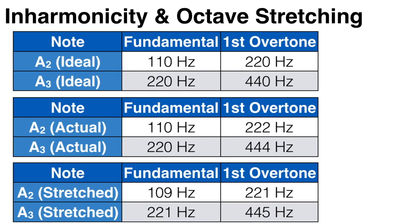So let's take two notes an octave apart: A at 110 Hz and A at 220 Hz, an octave higher. Now in theory, the first overtone of the lower note should be exactly 220 Hz, perfectly lining up with the fundamental frequency of the higher tone. But in practice, because of inharmonicity, the first overtone is slightly higher — so maybe 222 Hz. Now this will create beating between the two notes, and they will sound out of tune.